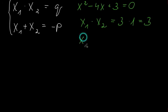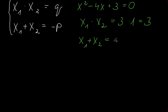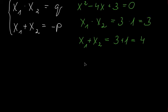What two numbers could we add to get 4? Because we need the negative of that number — the negative of negative 4 is 4. If we add 3 and 1 we get 4, and 4 is the negative of negative 4. So our solutions are x₁ = 3 and x₂ = 1.